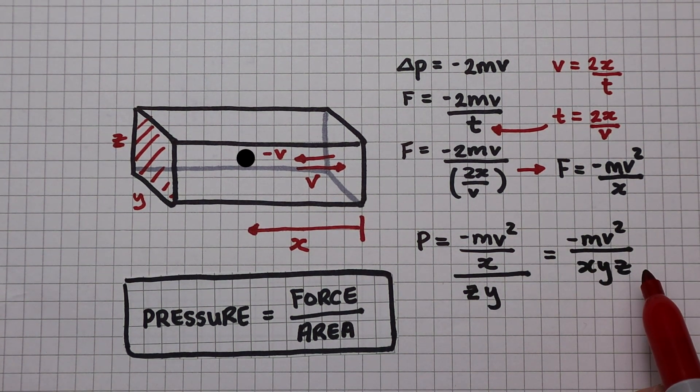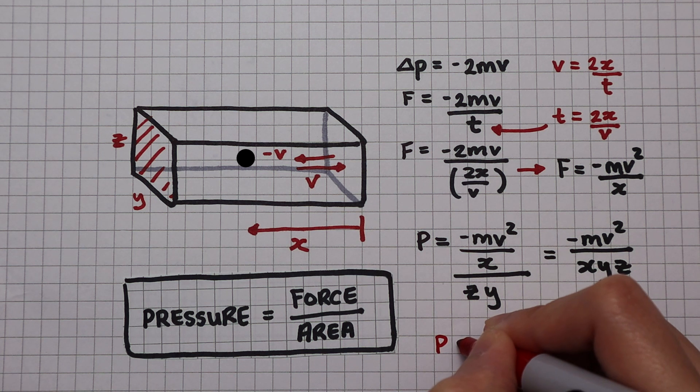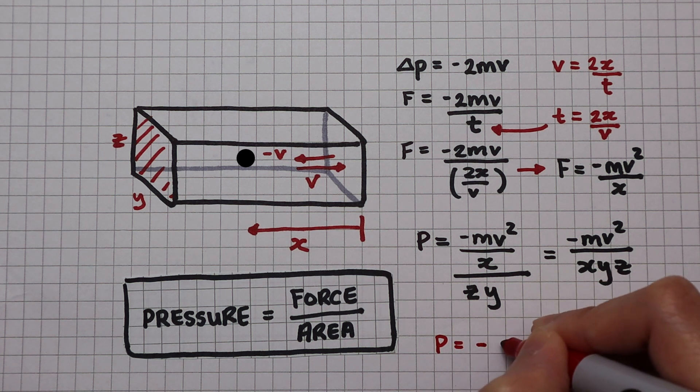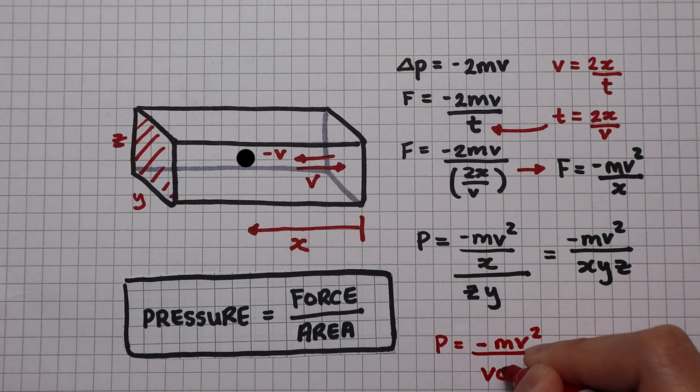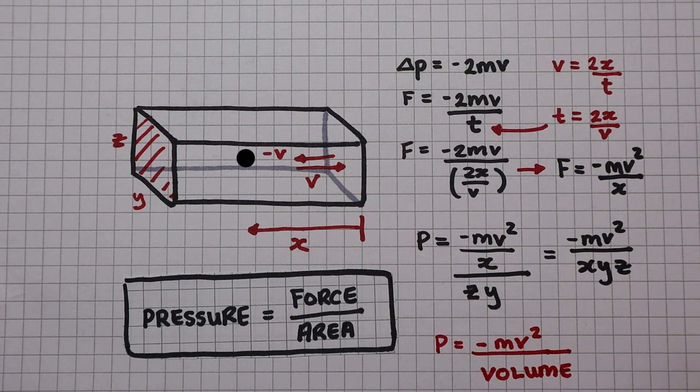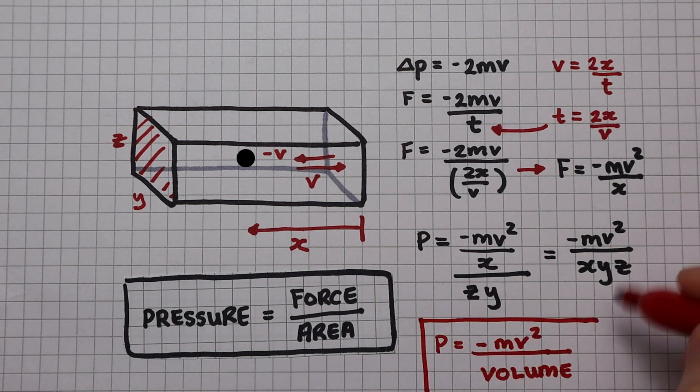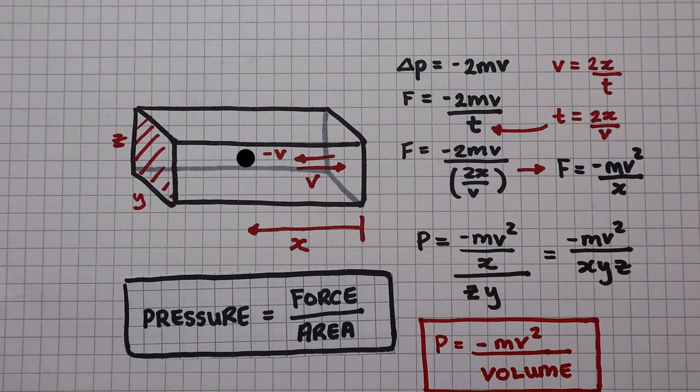And multiplying x, y, and z is equivalent to the volume of this container. So very conveniently, we have derived the equation for pressure in molecular kinetic theory. So pressure is equal to minus mv squared divided by volume.